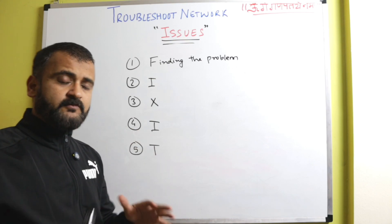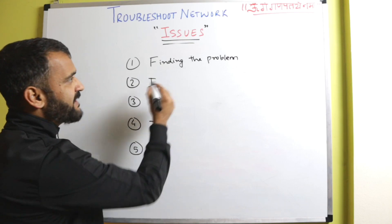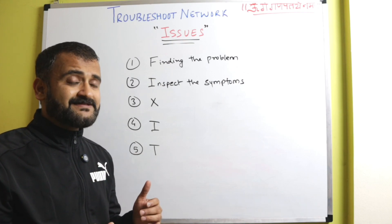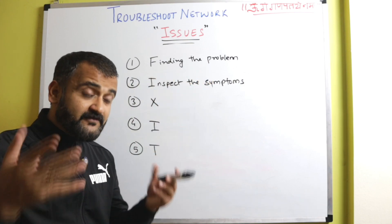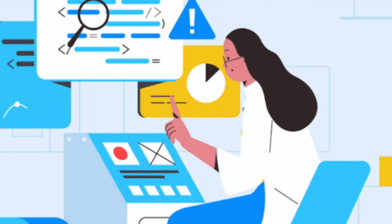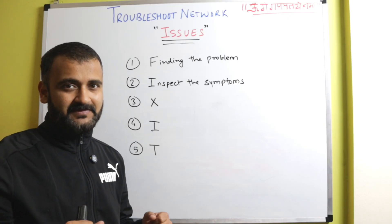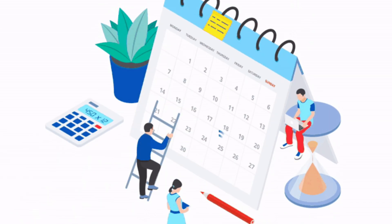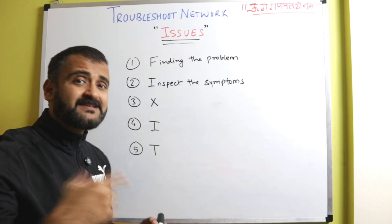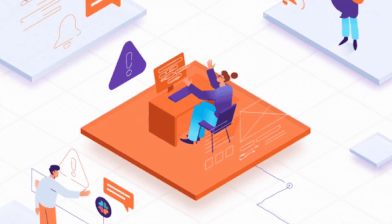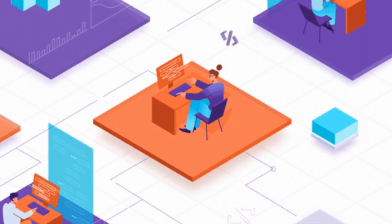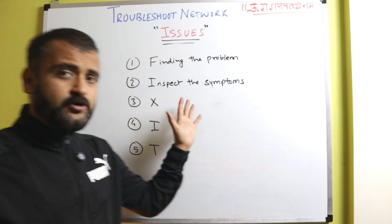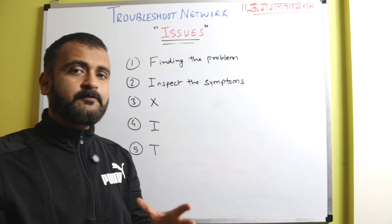We have to clearly define the problem — is the user not able to log in from a laptop, through mobile, or from one particular network location or Wi-Fi? Once you have found and defined the basic problem, the next step is to inspect the symptoms. What is the user facing? What kind of information have you gathered? For example, the user says they are not able to log in, but when inspecting, you find they cannot log in only during busy hours. Now that is a different problem — the problem narrative has changed.